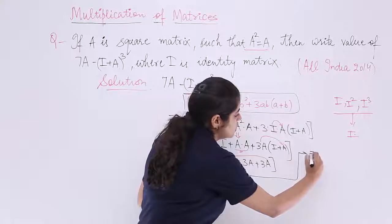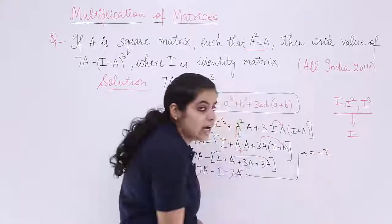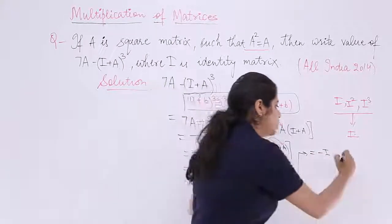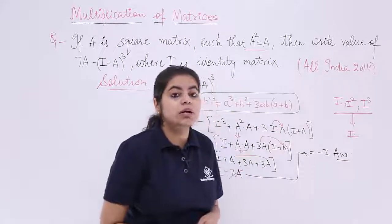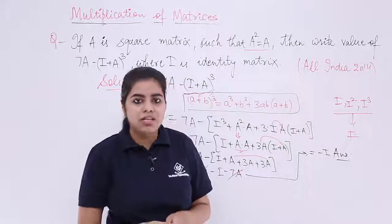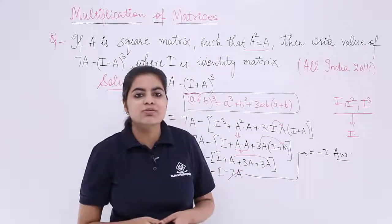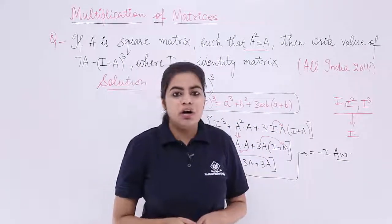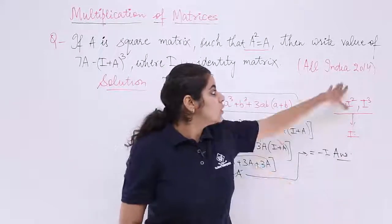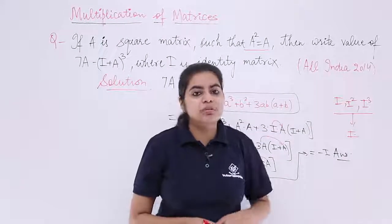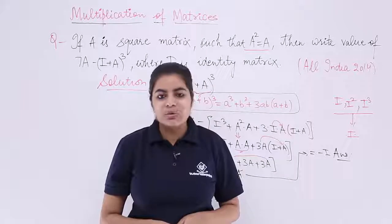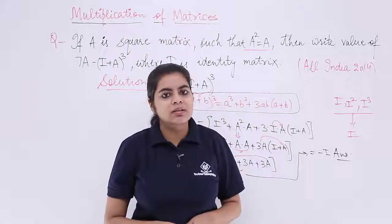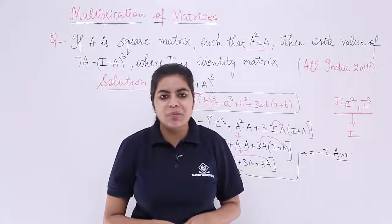Now +7A and −7A cancel each other. The answer that remains is −I. So the answer to this question is −I, the negative of the identity matrix. In this video we saw a 2014 exam board-level question involving the concept of multiplication of matrices.